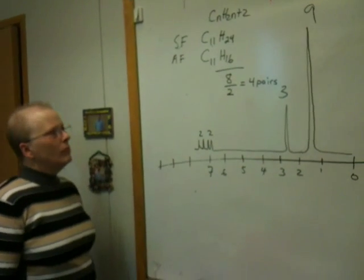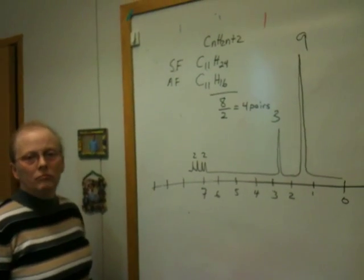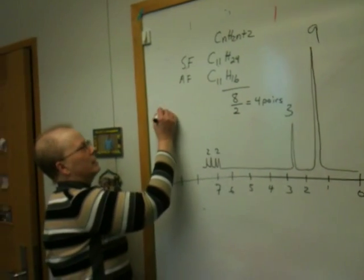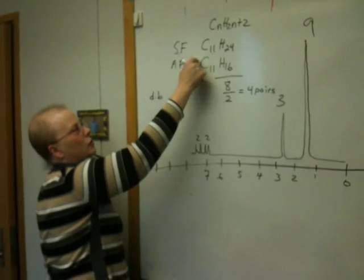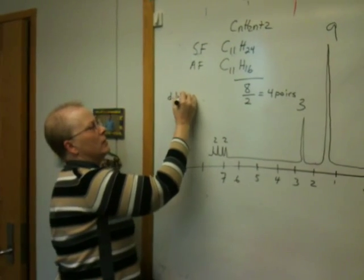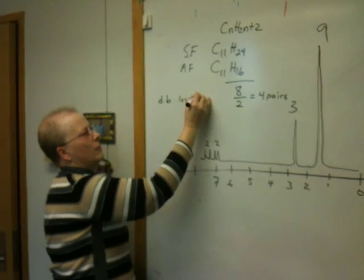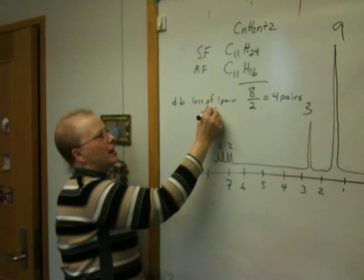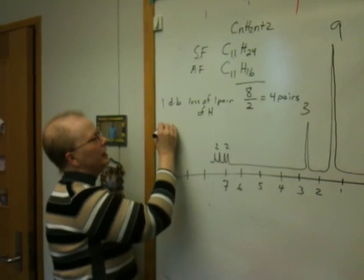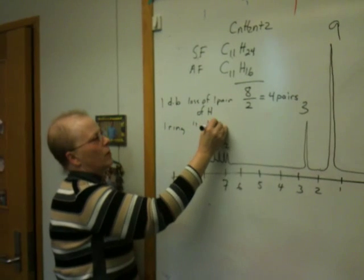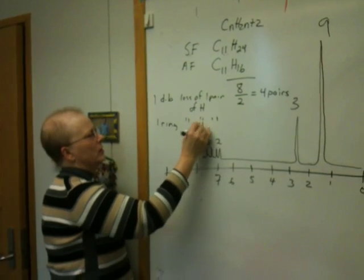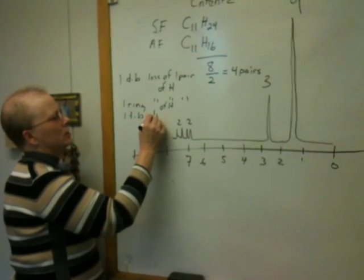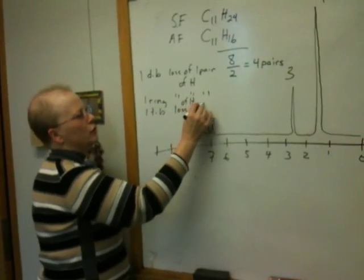Now, what does that mean? I've had people in my office recently asking me what does that mean. Each double bond in an unknown such as this results in the loss of one pair of hydrogens. Play with your models. Just prove this to yourself. Each ring results in the loss of one pair of hydrogens. Each triple bond results in the loss of two pairs of hydrogens.